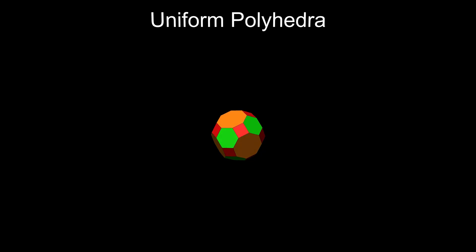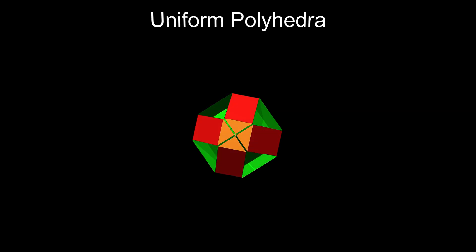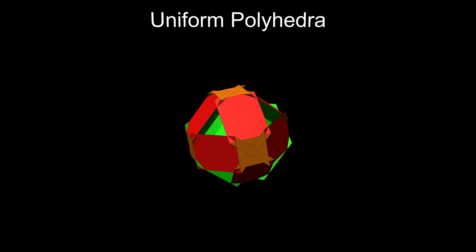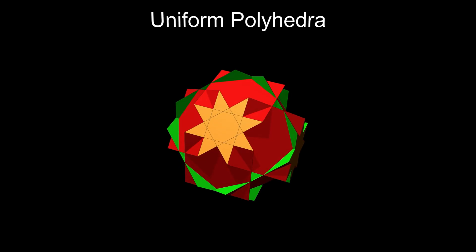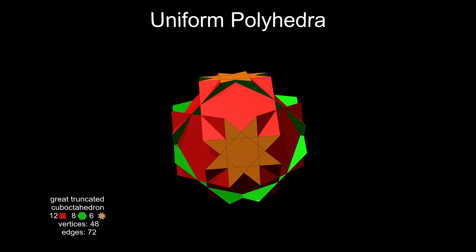A more complicated figure can be created from the truncated cuboctahedron. If we stretch the hexagons outwards while holding their centres in place, the other faces are initially distorted, but the squares eventually become squares again, the octagons turn into octograms, and we get the great truncated cuboctahedron.